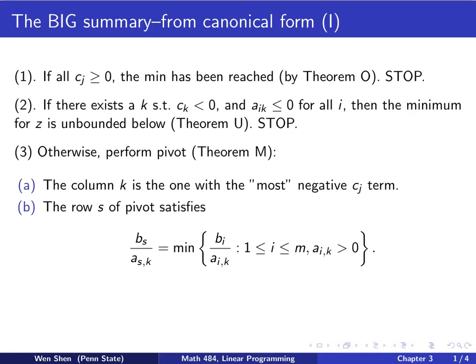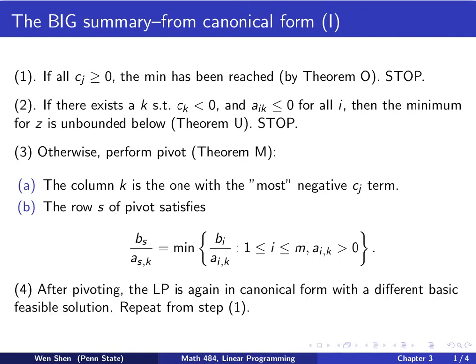So your pivoting point is column k, row s, and then you perform the pivoting process. After the pivoting, you would have a linear programming problem which is again in canonical form. And now it will have a different basic variable set with one variable changed, and they will have a different basic feasible solution.